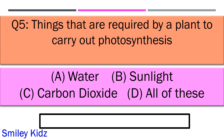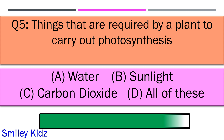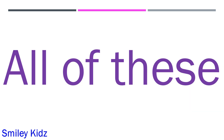Things that are required by a plant to carry out photosynthesis. Option A water, option B sunlight, option C carbon dioxide, and option D all of these. Your time starts now. And your time is up and the right answer is option D all of these.